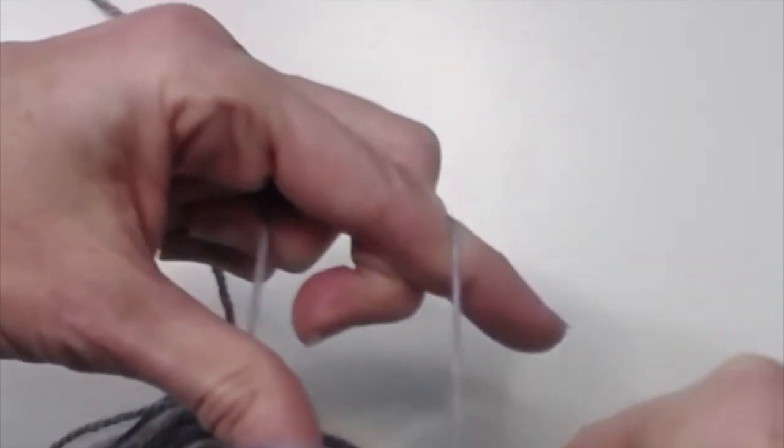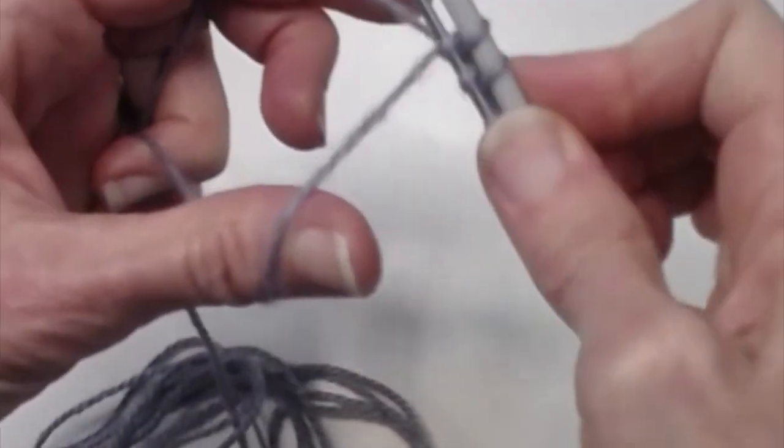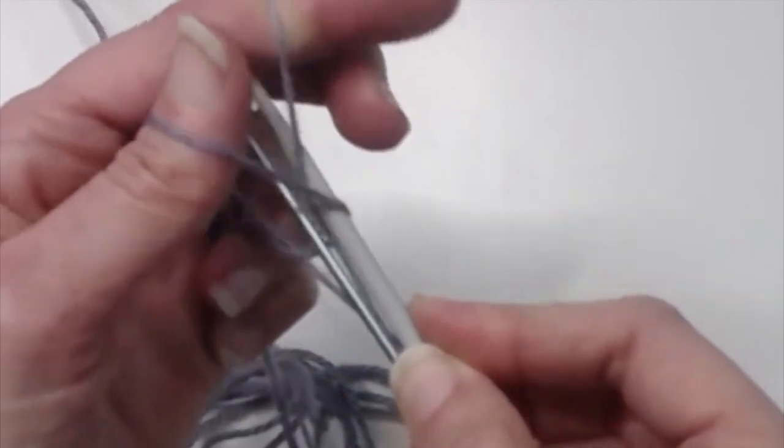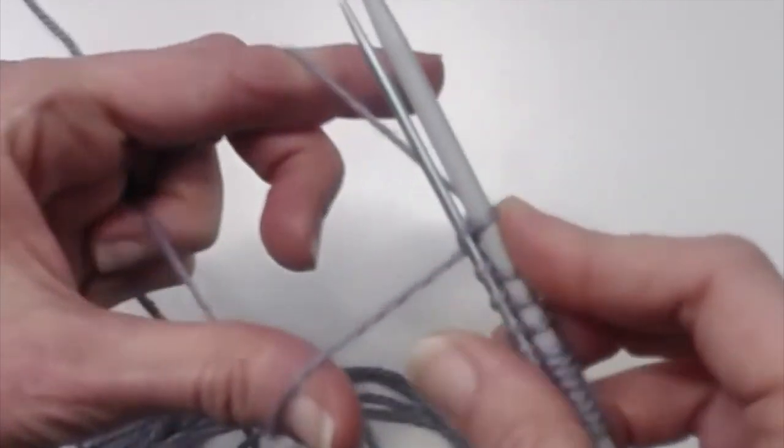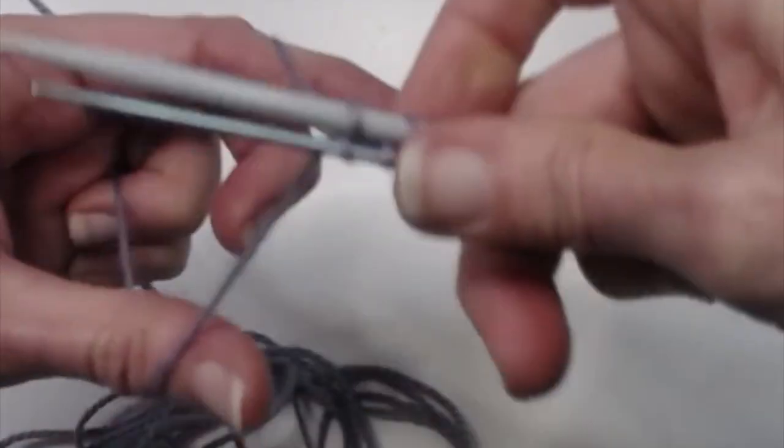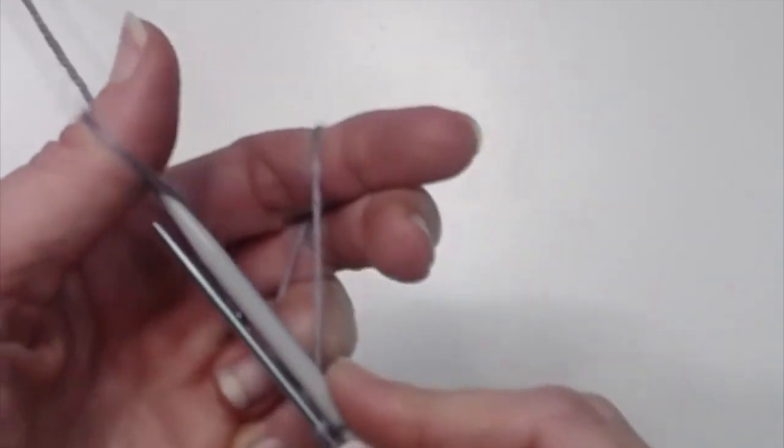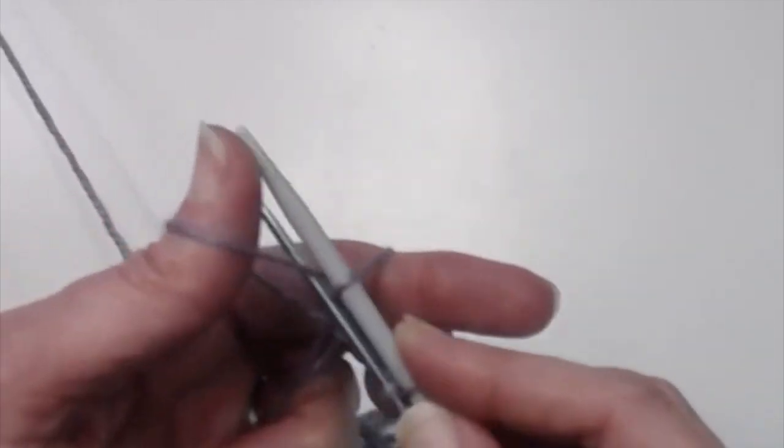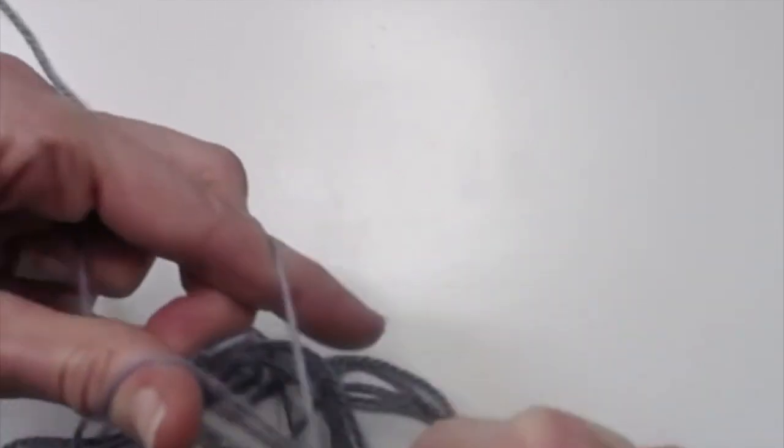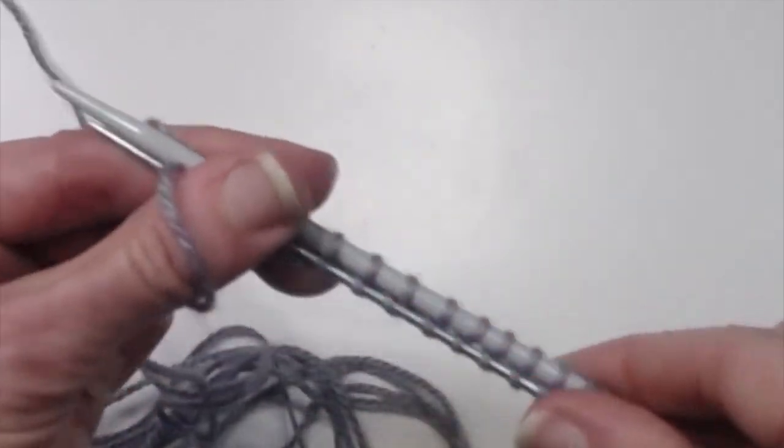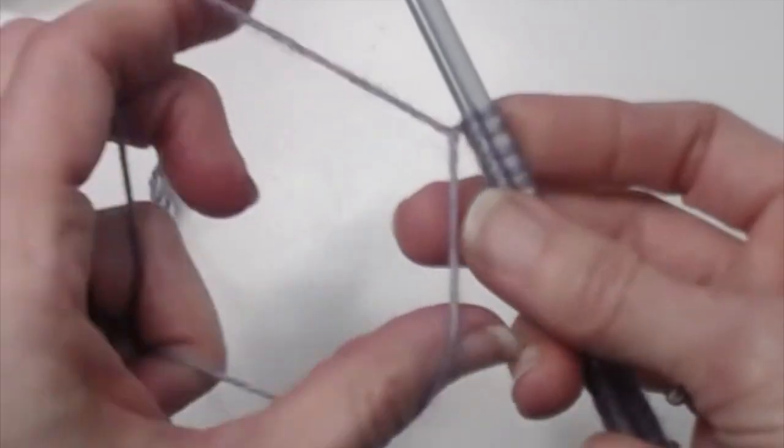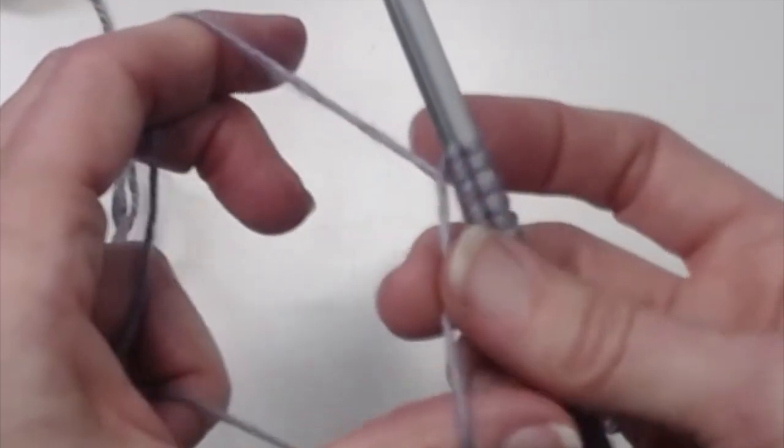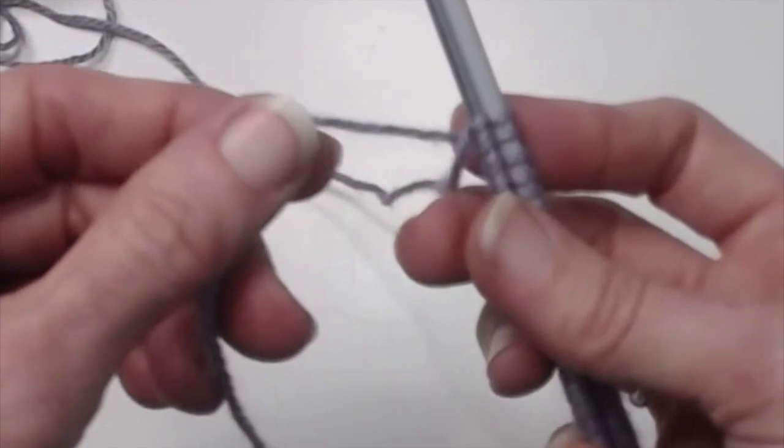I think you can see now with the twisting around why a circular needle is kind of difficult. So I'm going to come back to you when I've cast on all my stitches, and we'll take a look at how we work this first row.